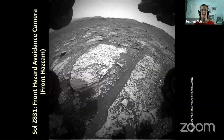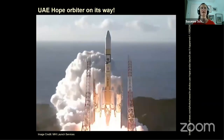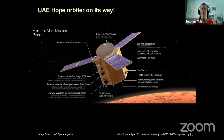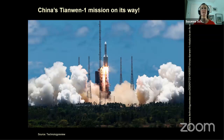The United Arab Emirates Hope Orbiter is on its way — it launched a couple of days ago. I watched it live from Japan and was really excited. It's an atmospheric investigator, and its instruments and orbit were carefully selected to complement the Trace Gas Orbiter from ESA and the MAVEN orbiter from NASA, adding information about the Martian atmosphere, water, oxygen, and the evolution of the Martian atmosphere. China also launched two days ago. I don't know much about that rover, but they went apparently successfully, and good luck to them as well.